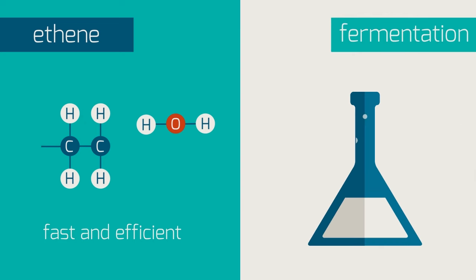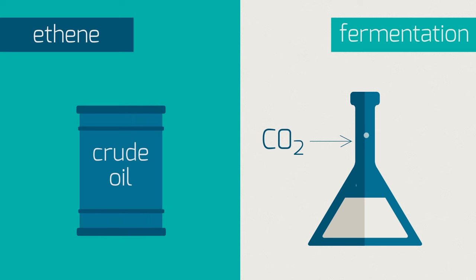Fermentation also yields carbon dioxide, which isn't useful to us. But ethene is cracked from crude oil, which is a non-renewable resource, so we won't be able to carry on acquiring it this way forever.